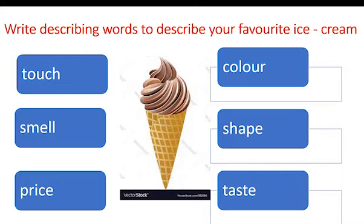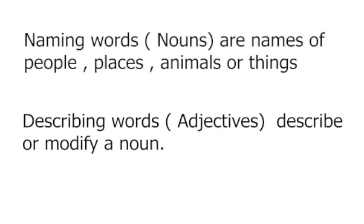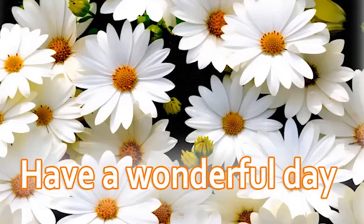Today's assignment: describe your favorite ice cream using the clues — touch, smell, price, color, shape, taste. So we have learnt that nouns are naming words of person, place, animal and thing, and describing words also called as adjectives describe or modify a noun. That's all for today. Have a wonderful day ahead.